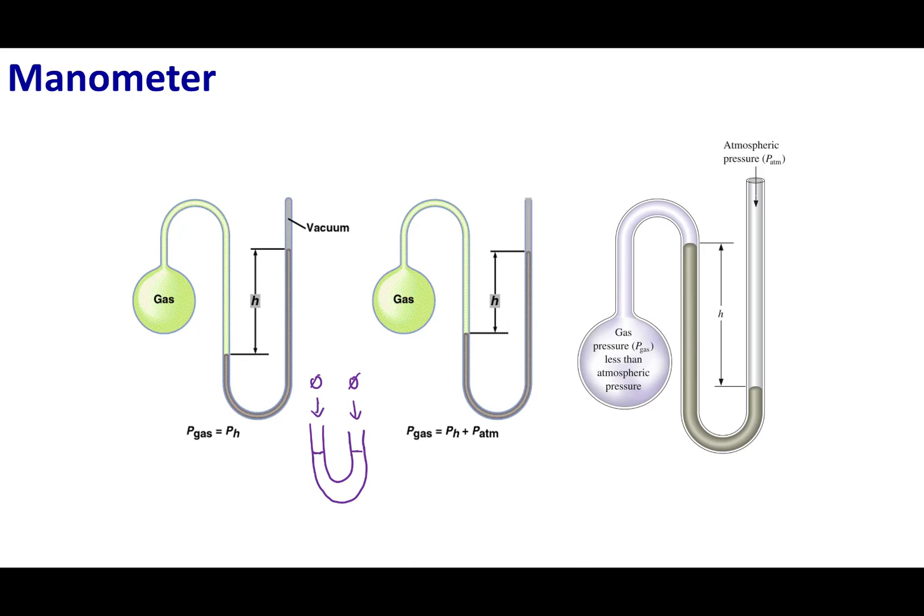What I can do is take this tube of mercury in this U shape and connect it to a gas. This is my sample gas that I want to measure the pressure of. On the other side of my mercury tube, I'm going to have a vacuum.